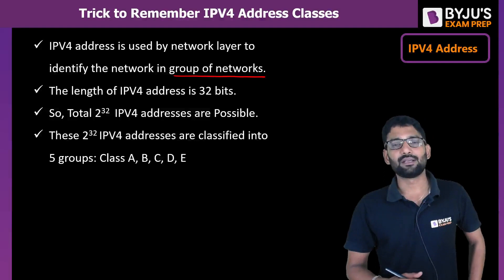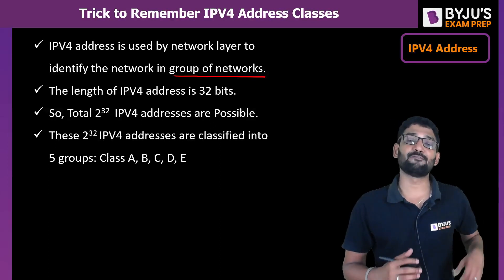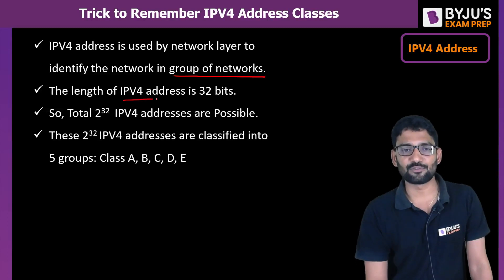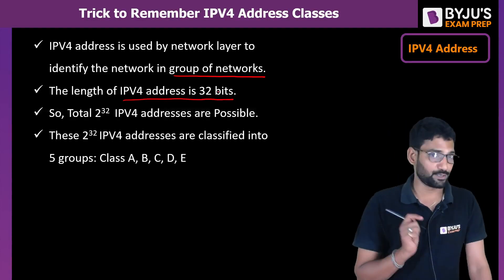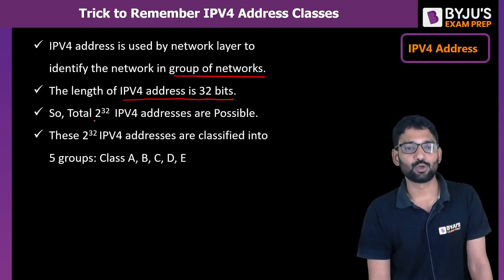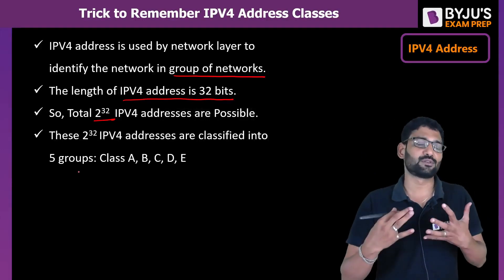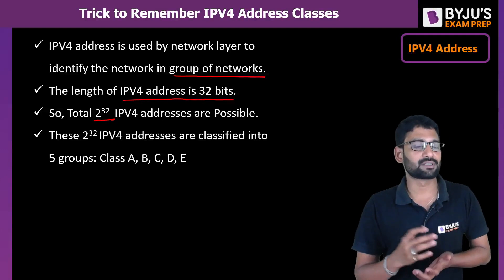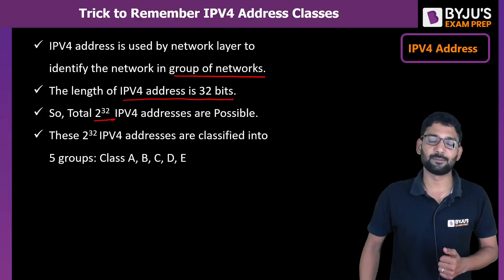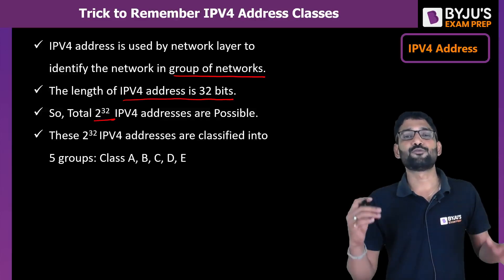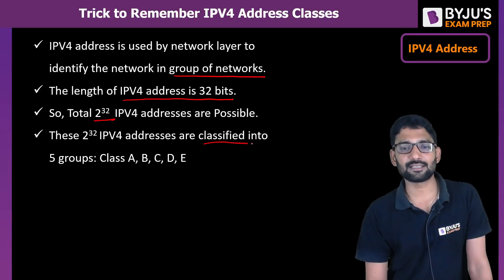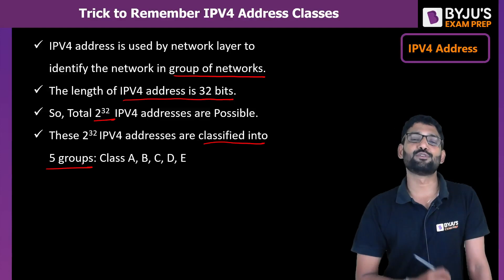We are here focusing on IPv4 address. The length of an IPv4 address is 32 bits. With 32 bits, how many total addresses are possible? 2 raised to 32 addresses — approximately 4.2 billion IP addresses are possible. These 4.2 billion IP addresses are classified into five groups.